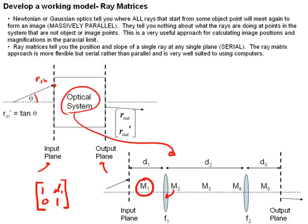The next matrix M2 corresponds to the lens. We can also look up what that is, and that's 1, 0, minus 1 over F1, 1. We do the same for matrix M3.